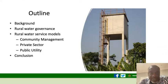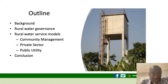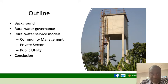The outline will be as follows. I'll start with the background, a little bit on the rural water governance, and then I'll focus on the rural water service models — there are three main models: community management, the private sector, and the public sector — and then I will conclude.